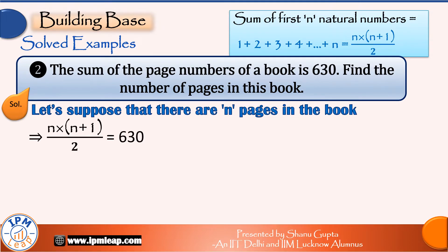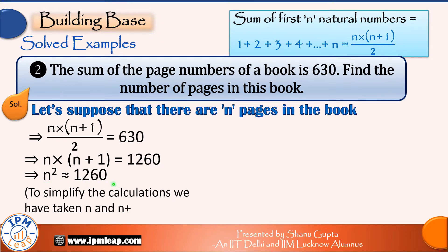n(n+1) = 1260. Well, though this is a quadratic equation, we don't really need to solve it because solving a quadratic equation can be quite lengthy at times. Instead, what we will do is some approximations and find n directly, because we know that n should be an integer. So we can say that n² ≈ 1260.